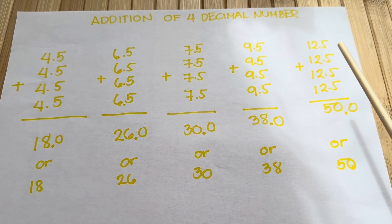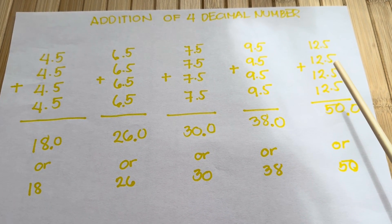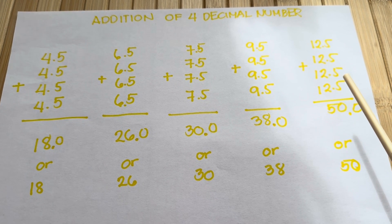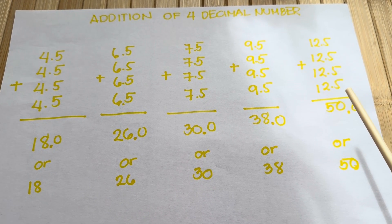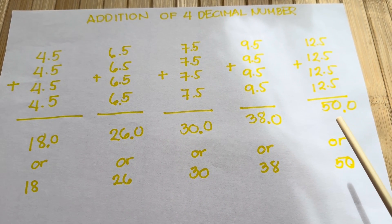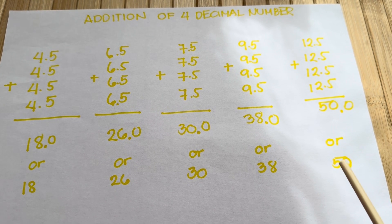And lastly, 12.5 plus 12.5 plus 12.5 plus 12.5 is equals to 50.0 or 50.